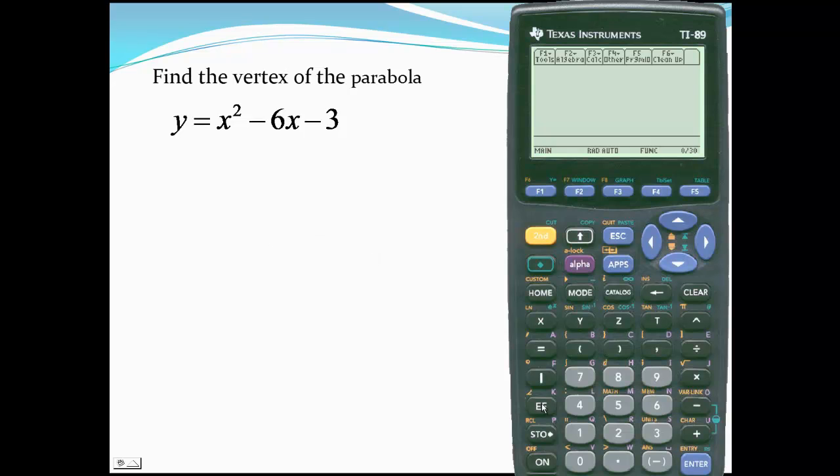Now we'll find the vertex of the parabola y equals x squared minus 6x minus 3. We'll enter the equation into the y equals part of our calculator, and then we'll graph by simply pressing graph.